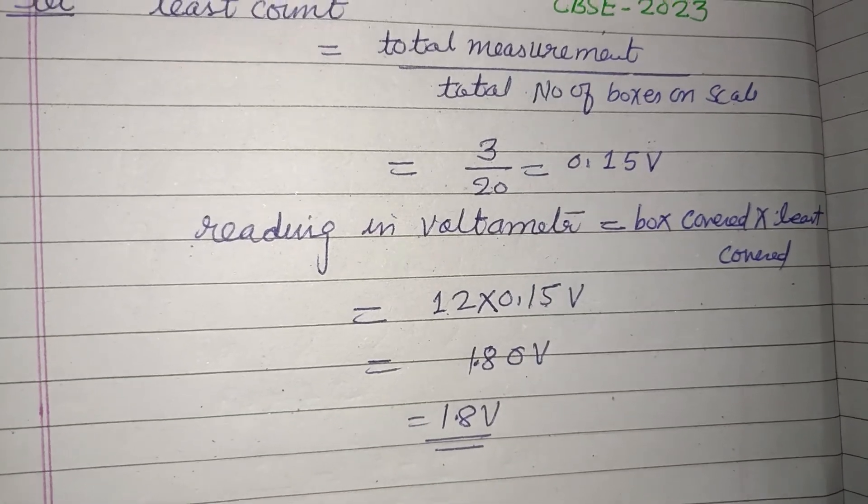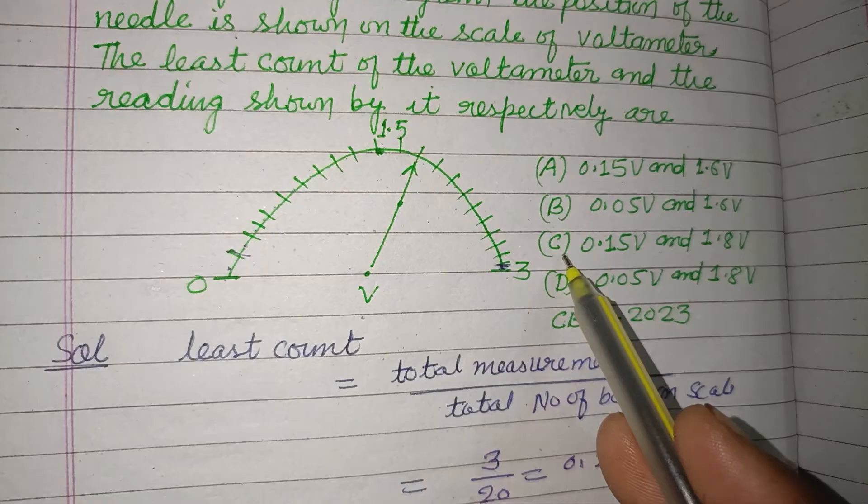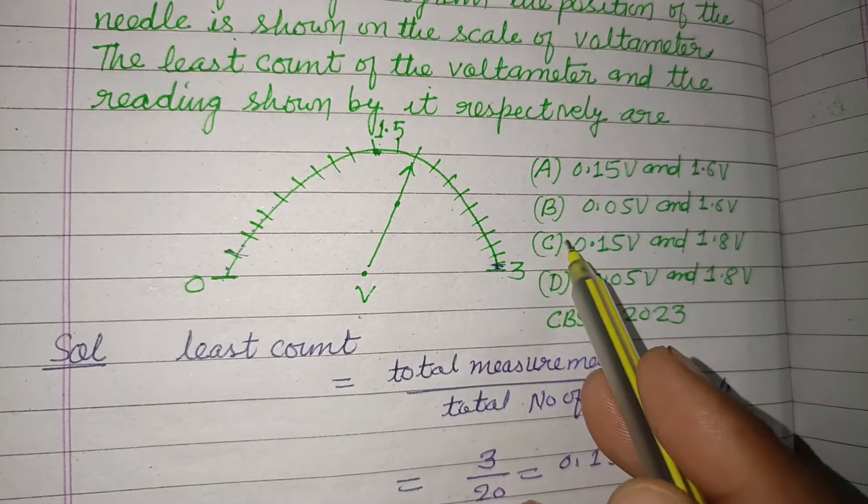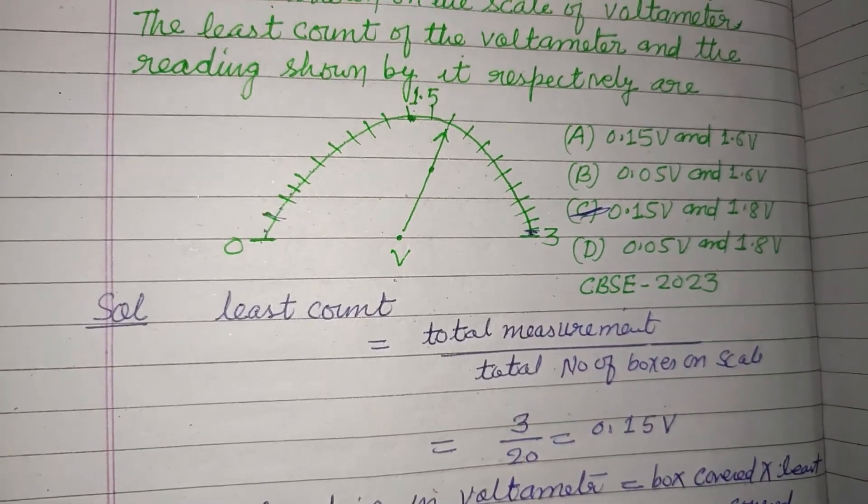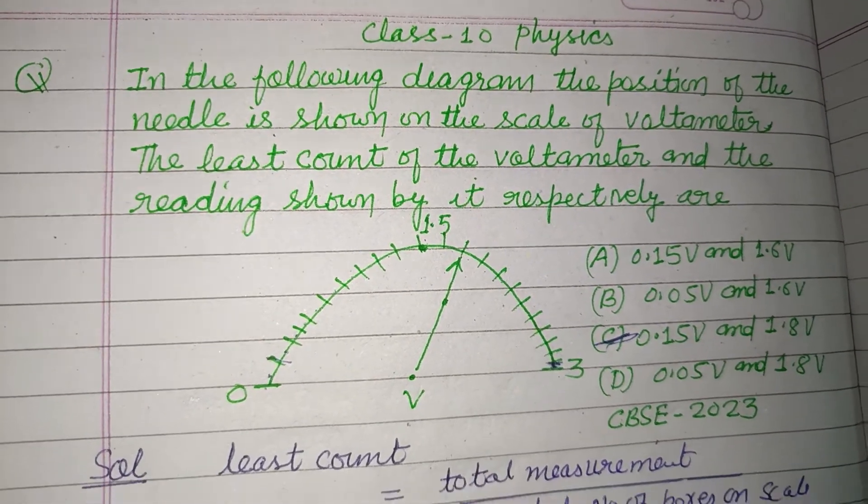And 1.8 volt is the reading of the voltmeter. So the answer is 0.15 volt and 1.8 volt. C is the correct answer to this question. I hope you got it. Please like the video, subscribe to the channel. Thanks for watching.